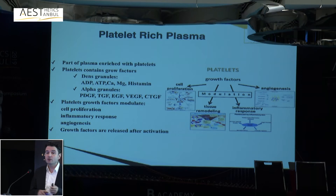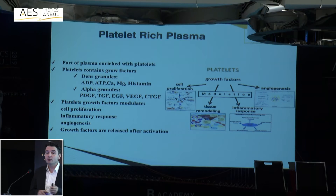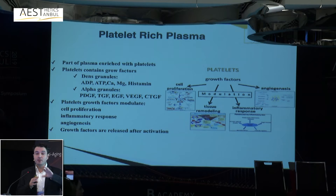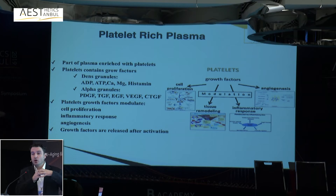For example, when we cut our hand, blood comes in contact with oxygen, fibrinogen becomes fibrin, platelets arrive, they are activated, release growth factors, and you have proliferation of skin and wound closure in that area. This is the concept behind why we use PRP in aesthetics.